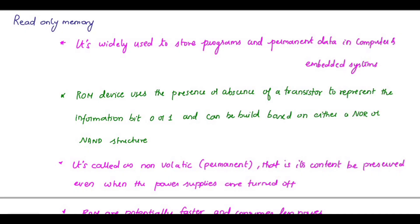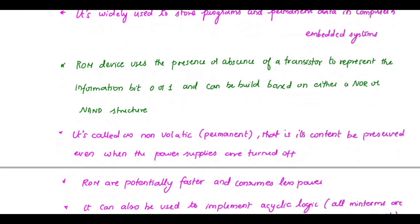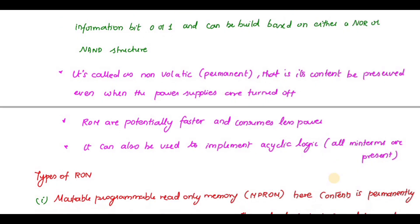In this video we are going to study about Read-Only Memory (ROM). It is widely used to store programs and permanent data in computers and embedded systems. This device uses the presence or absence of a transistor to represent a bit, 0 or 1. It can be built based on either a NOR or NAND structure. It is also called non-volatile, meaning its content is preserved even when the power supply is turned off. ROM is potentially faster and consumes less power, and can also be used to implement acyclic logic where all minterms are present.